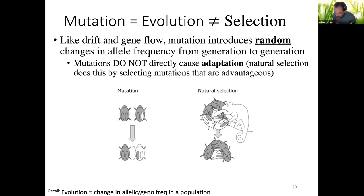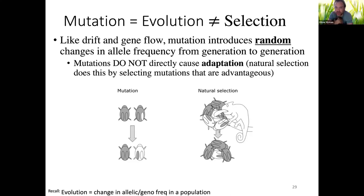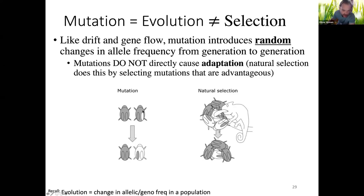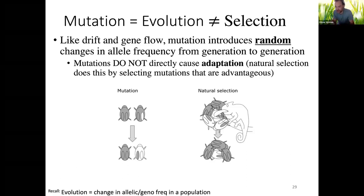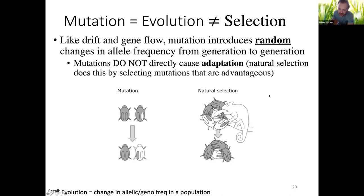Introducing mutations into a population by definition introduces new potential alleles and changes allele frequencies, so by definition that population is evolving. But although mutation is a type of evolution, mutation is not selection and does not cause adaptation. Mutation might introduce a new trait — for example, a mutation that makes white beetles — but you won't have adaptation until some selective pressure comes and selects for or against that mutation. Mutations change allele frequencies randomly. Only when natural selection acts on those mutations do we see adaptation. Mutations do not directly cause adaptation — that's what natural selection does.